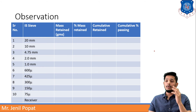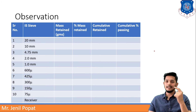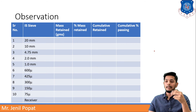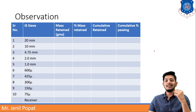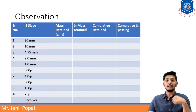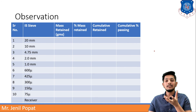Different sizes of sieve as given in the data sheet are: 20 mm, 10 mm, 4.75 mm, 2 mm, 1 mm, 600 microns, 425 microns, 300 microns, 150 microns, 75 microns, and at last the receiver or pan is kept.